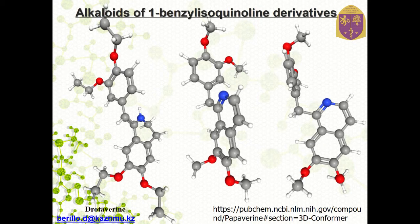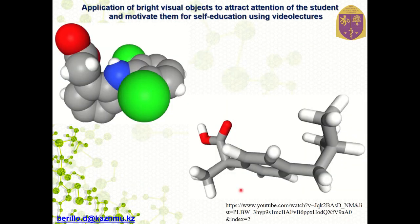With blue color we point nitrogen, red color represents oxygen, carbon, and white represents hydrogen. Therefore, when you do this type of illustration, you attract the attention of students and also you can stimulate and motivate them for self-education using various recorded video lectures.